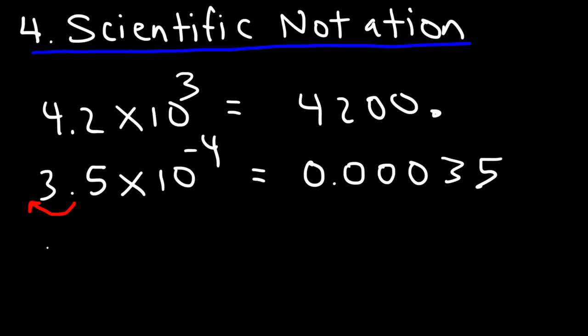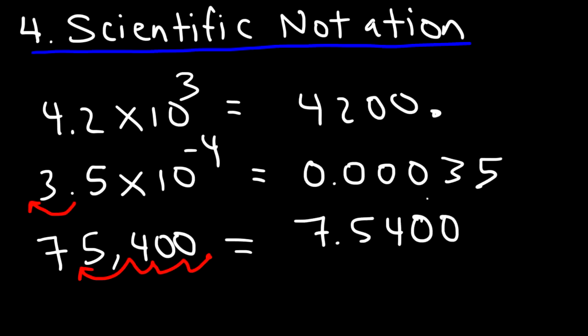So for instance, let's say if I have 75,400 and I wish to convert it to scientific notation. Because this is a big number, I know that my exponent will be positive. Now my decimal point is here. I need to move it between the first two non-zero digits on the left. So I'm going to move it one, two, three, four spaces. So this is going to be 7.54 times 10 to the fourth power. If you want to, you can add the other zeros, but the other zeros are not important. So I'm just going to write it like this.